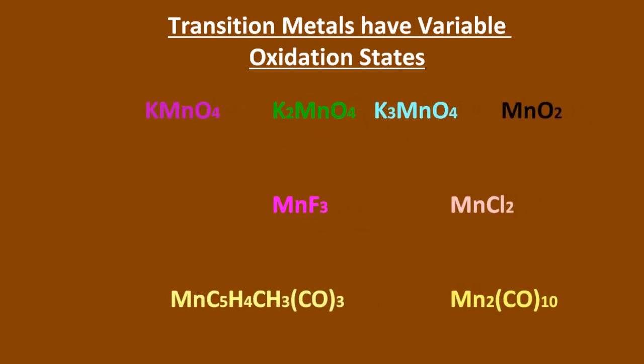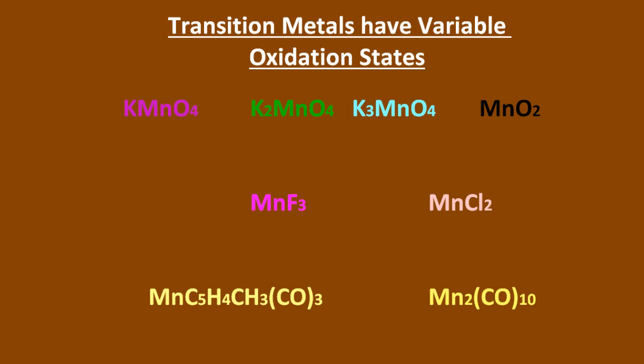So manganese has the most variety in oxidation states of all the transition metals. So pause the video and work out what they are here. Lazy, I bet he didn't pause. Yep. It goes from plus 7 all the way down to 0, the most of any transition metal.